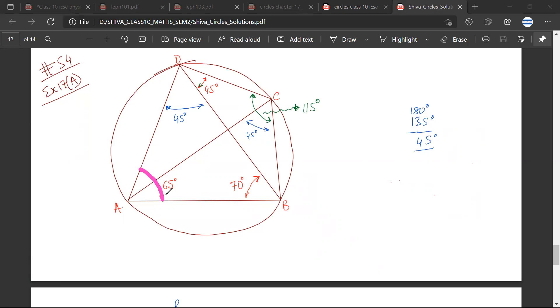So this angle 65 degrees plus this angle 115 degrees. So 65 degrees plus 115 degrees is 180 degrees.